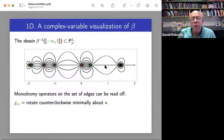So monodromy operators, we have one for each of the special points, zero, one, and infinity. They can be read off on the set of edges. So G infinity is to rotate counterclockwise minimally around a pre-image of infinity.